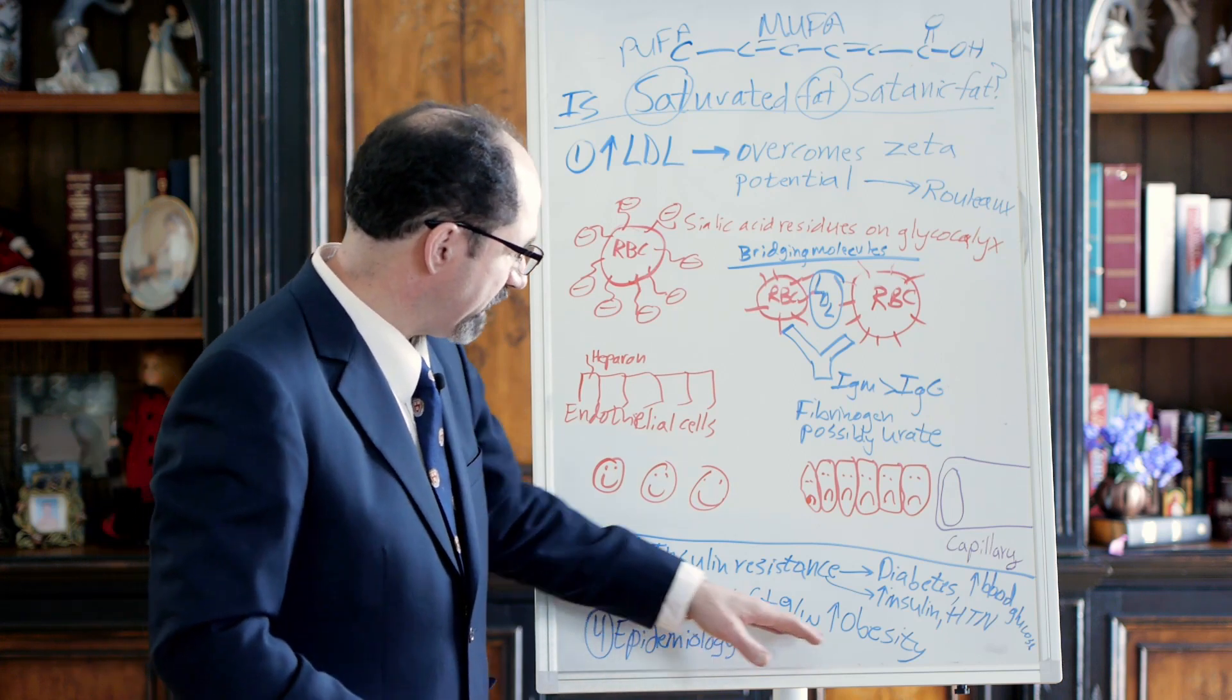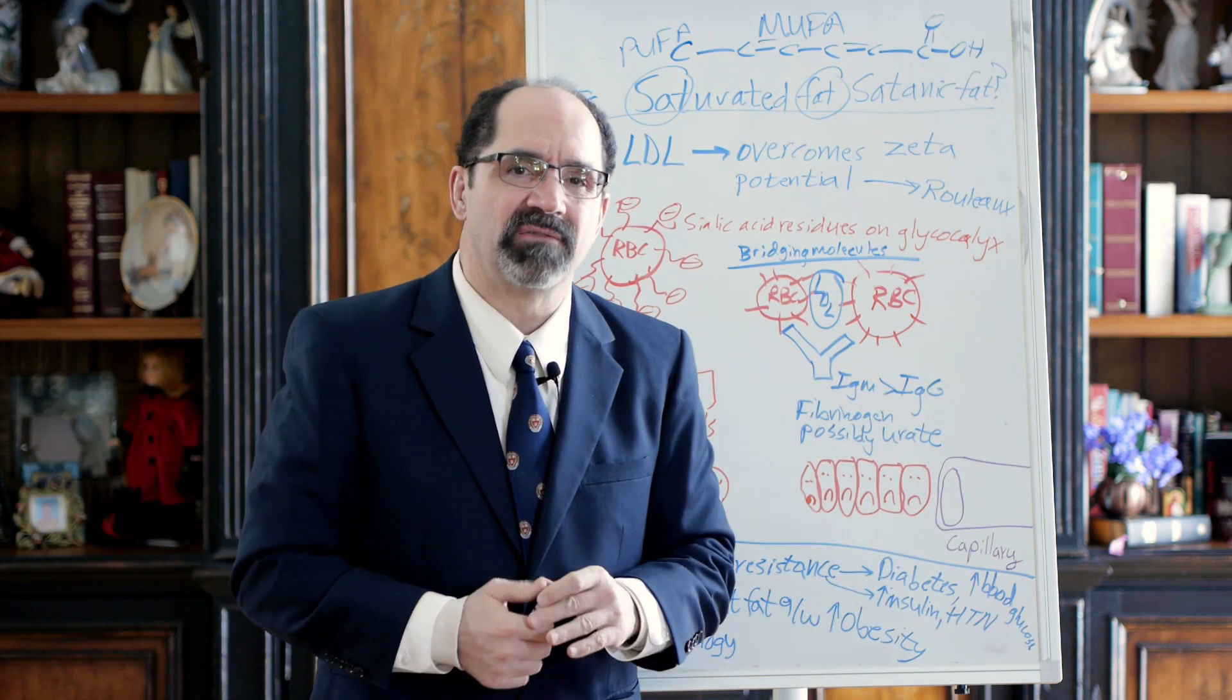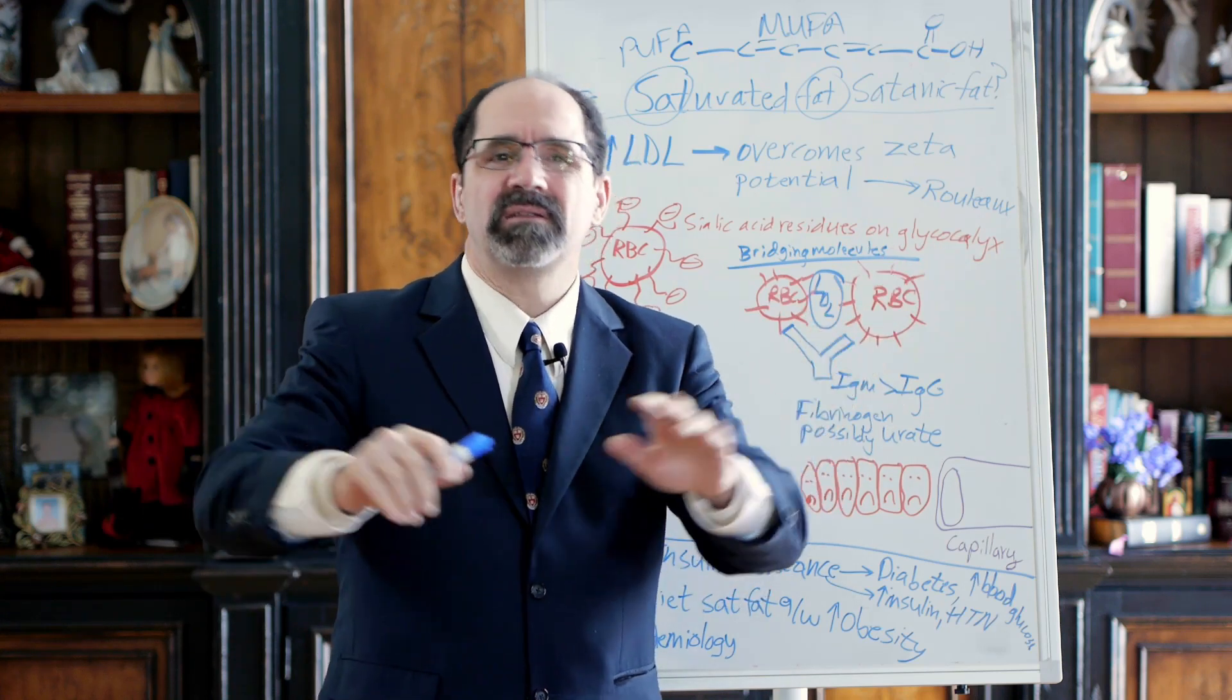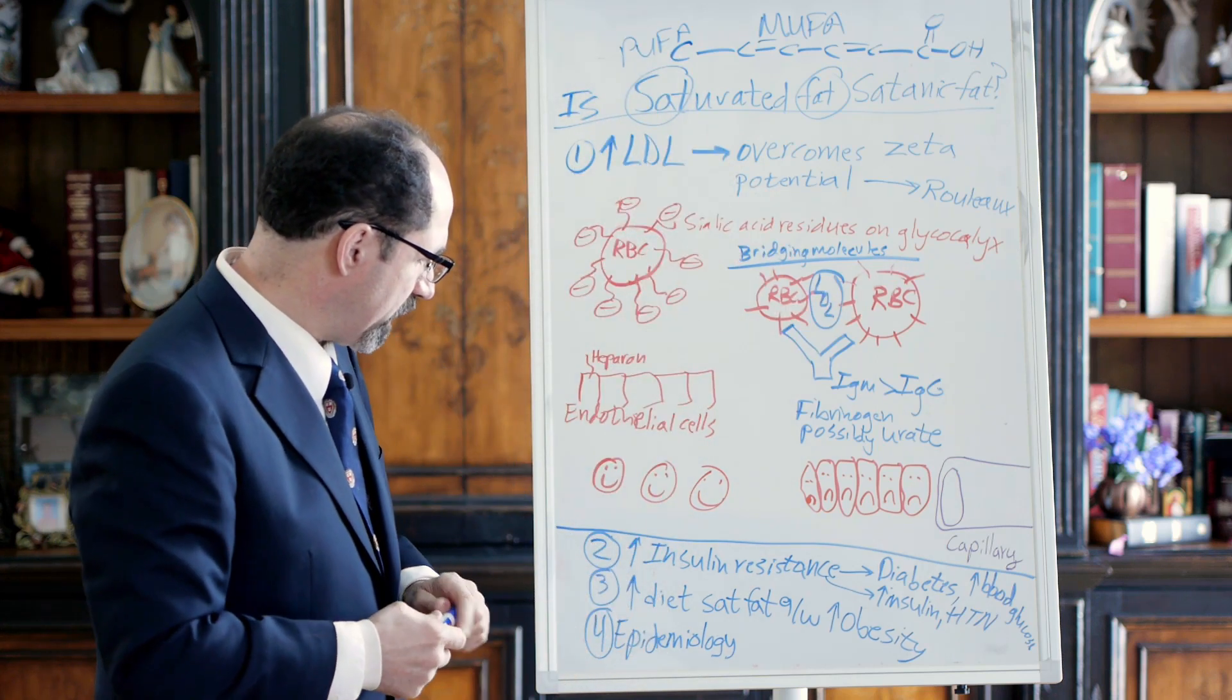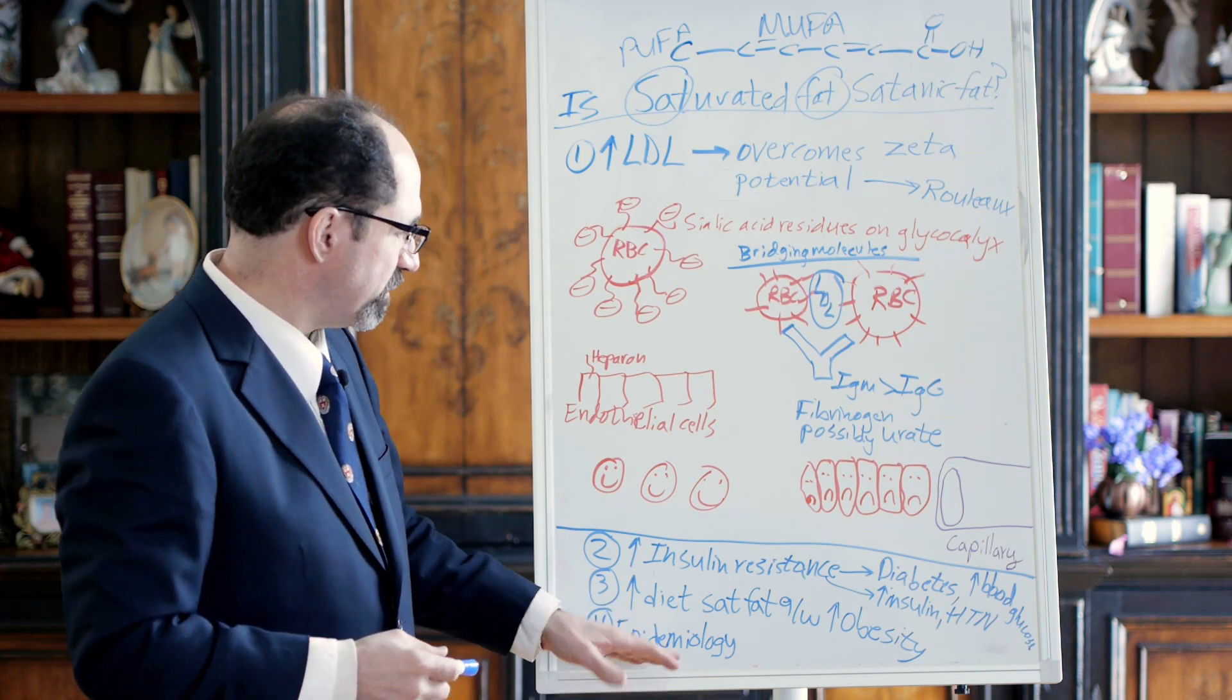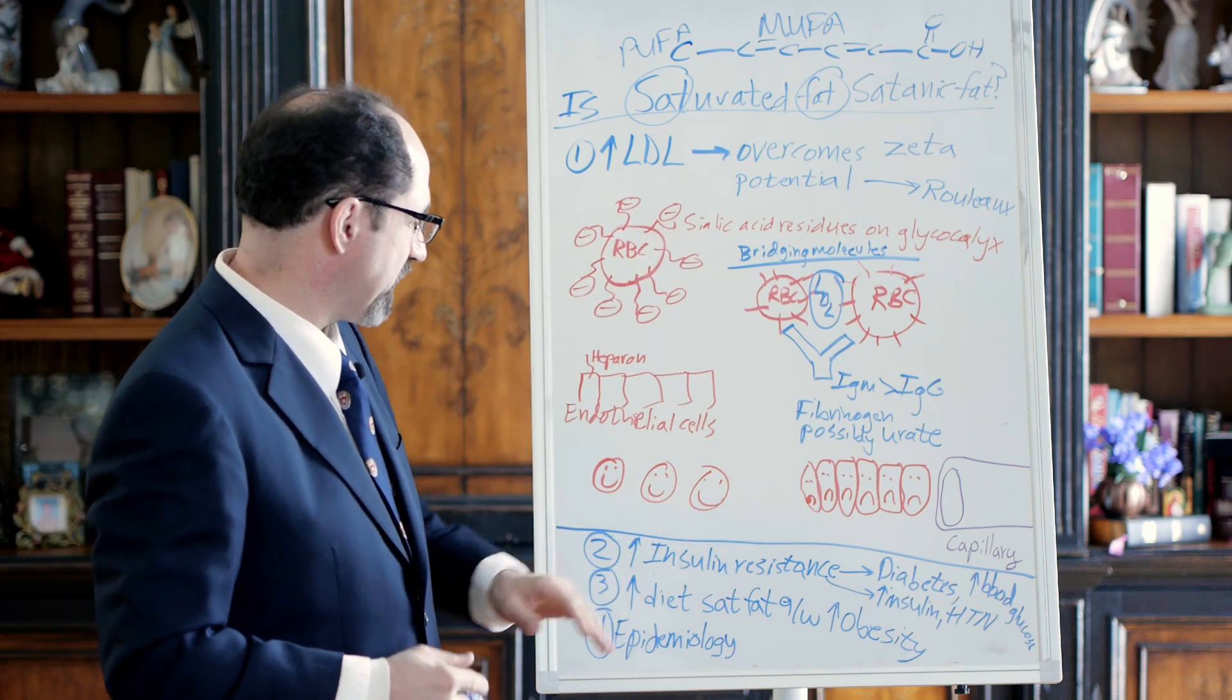What else about saturated fat? Increased dietary saturated fat is associated with increased risk of obesity. If you look at the BMI, body mass index, of vegans it's around 22 or 23. And then the more meat a person eats, the higher their average BMI goes. The next point is to talk about epidemiology. Whatever populations eat less saturated fat, they tend to be skinnier and have less of these atherosclerosis, diabetes type diseases.